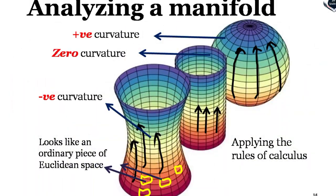On your screen, I've tried to analyze the manifold: a sphere where lines converge has positive curvature; a cylinder-type structure has zero curvature because lines are parallel; and a hyperboloid has negative curvature. We differentiate these structures and call them differential manifolds so that we can apply the rules of calculus, making it easier to study.